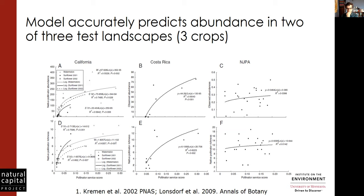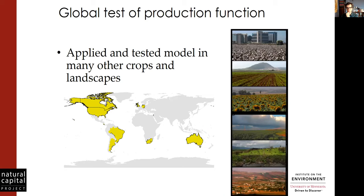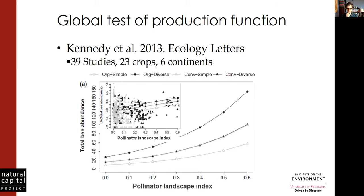Here are three tests that have been done. For modeling native abundance, we got pretty good fit in California and Costa Rica. But in some landscapes, like New Jersey and Pennsylvania in the Eastern United States, we just have never been able to get a good fit there. Because of that, we wanted to make sure the model works more generally, so we did a global test of this production function across many other crops and landscapes around the world.